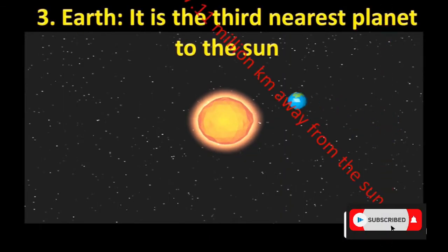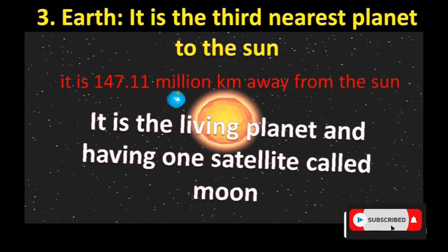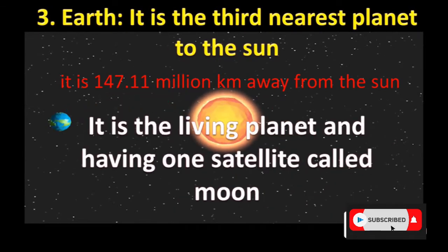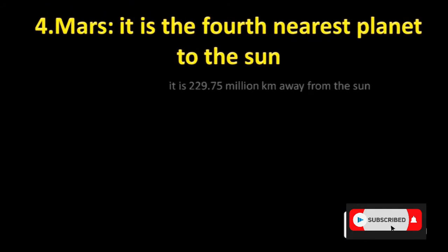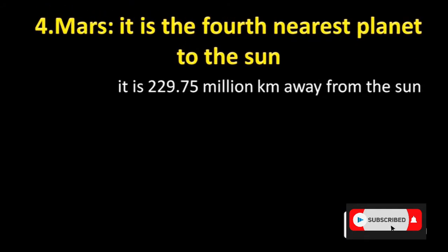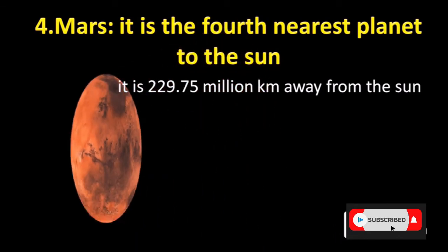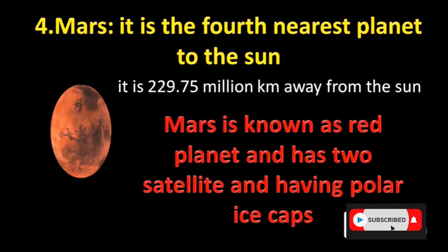The third planet nearest to the sun is Earth. It is about 147.11 million kilometers away from the sun. It is the only living planet and has one satellite called the Moon. Mars is the fourth nearest planet to the sun, about 229.75 million kilometers away, and is known as the red planet with two satellites.